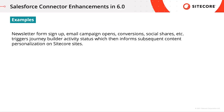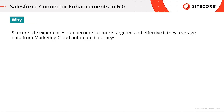A couple of examples can be when our customer signs up on our newsletter form on our website, opens the email campaign that is sent, conversions on our e-commerce website, or social shares — features which subsequently trigger the journey builder activity status, which then informs content personalization on Sitecore sites. With this enhancement, Sitecore site experiences can become far more targeted and effective if they leverage data from marketing cloud automated journeys.